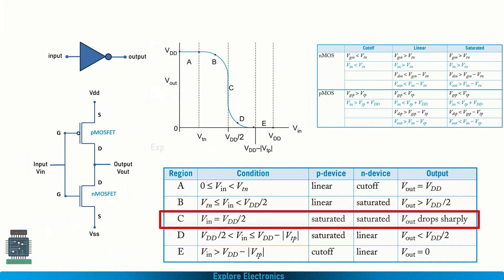Region C is the exact midpoint where Vin is VDD/2 and the output has also reduced to VDD/2. At this point, both transistors — P and N — are in the saturation region. So Vout equals VDD/2 and Vin is also VDD/2.